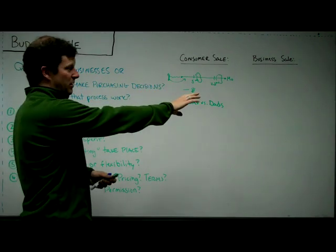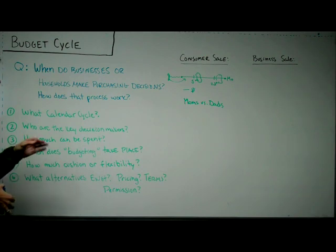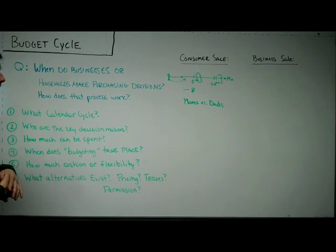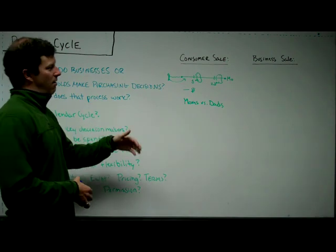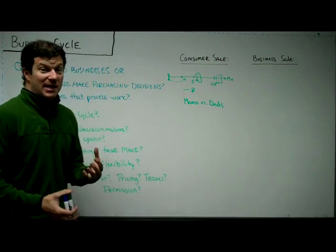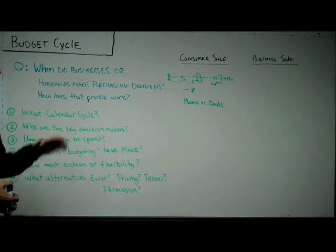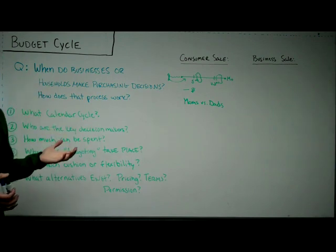But how much cushion or flexibility is there around your product? Again, big ticket, small ticket - with consumers it's a little harder to establish. And what alternatives exist? Can they pay for it over time? Can they put it on a credit card? Do you have a layaway process? Those are all things designed to get around the objections around budgeting, about budget cycles - 'Hey, I don't have any money until next year or until next month.'